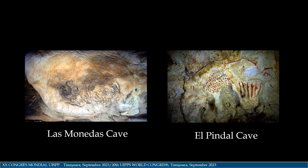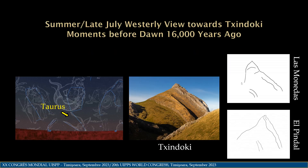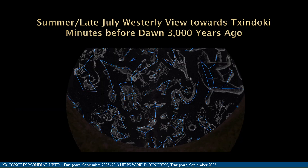We can also look to the elephants depicted on the walls at Las Monedas and El Pindal to validate this astronomical perspective. The depicted horns of Taurus closely resemble the hind legs and trunk pareidolia of the elephant in Chindoki, as the mountain would have been viewed merging with the dawn. Half a precession cycle closer to our time, we cannot see Taurus in the pre-dawn sky looking from the same perspective at Chindoki as the El Pindal and Las Monedas artists.